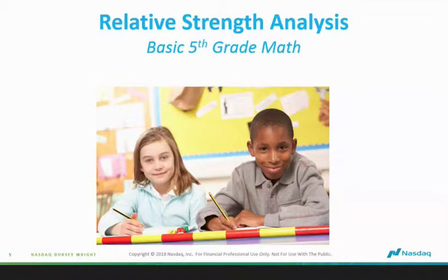I'd call it fifth-grade arithmetic, because we do this in the most simple, straightforward way — relative strength is simply dividing something by something. Take Coca-Cola and Pepsi, for instance. If I want to know which one has the best relative strength, I divide the price of one by the other. That gives me a number, and I can then plot it on the point-and-figure chart. Very simple stuff.